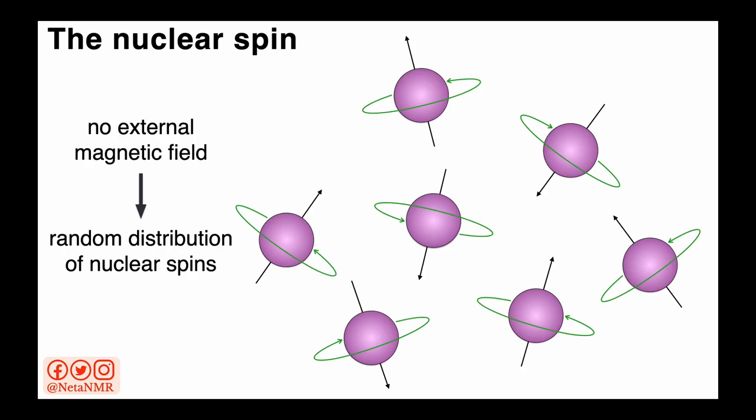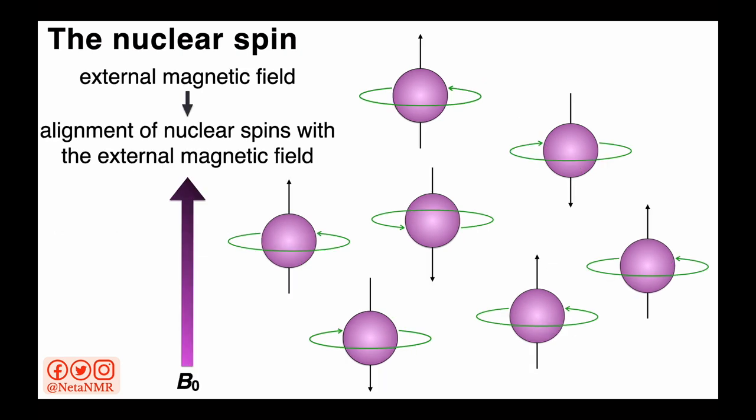In the absence of an external magnetic field, the nuclear spins in a sample have random orientations. When we place the sample in an external magnetic field, such as that created by the superconducting magnets we use in NMR and MRI, the spins align with the external magnetic field, denoted as B0 and shown here by the purple arrow.